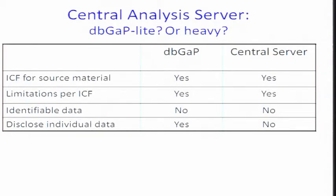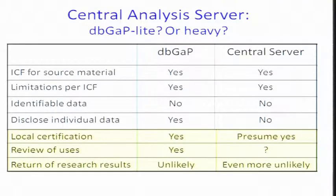Neither one has identifiable data. But a big difference is dbGaP will disclose individual data — not identified, but individual — whereas this system would not. So, being in the LCIRB world, that sounds really good. There are other issues which I don't think are as obvious. The quote, local certification — local certification is required for putting anything into dbGaP. For the central server, I would presume yes is the answer, though I'm not sure it would be the same.